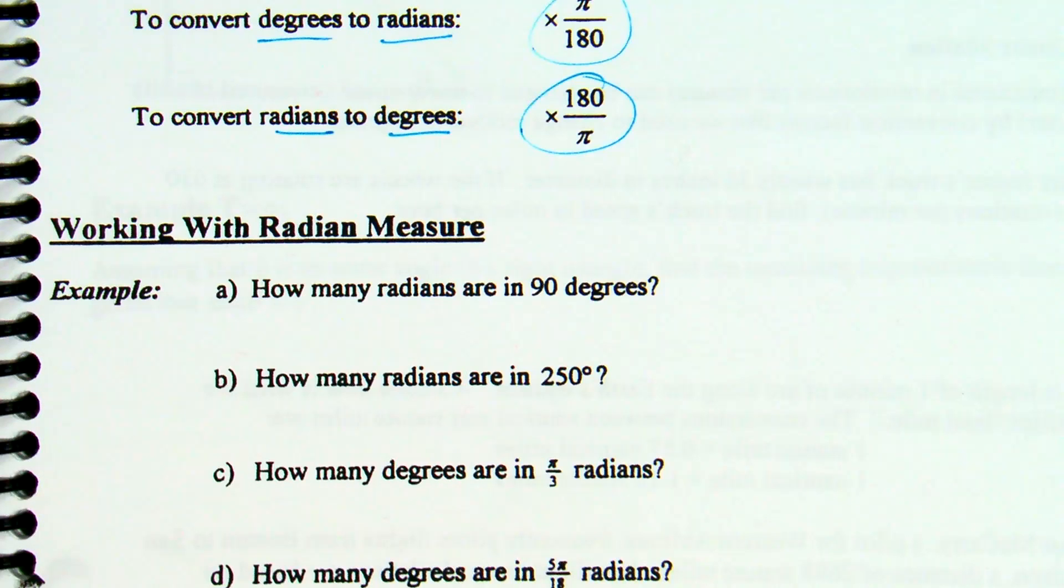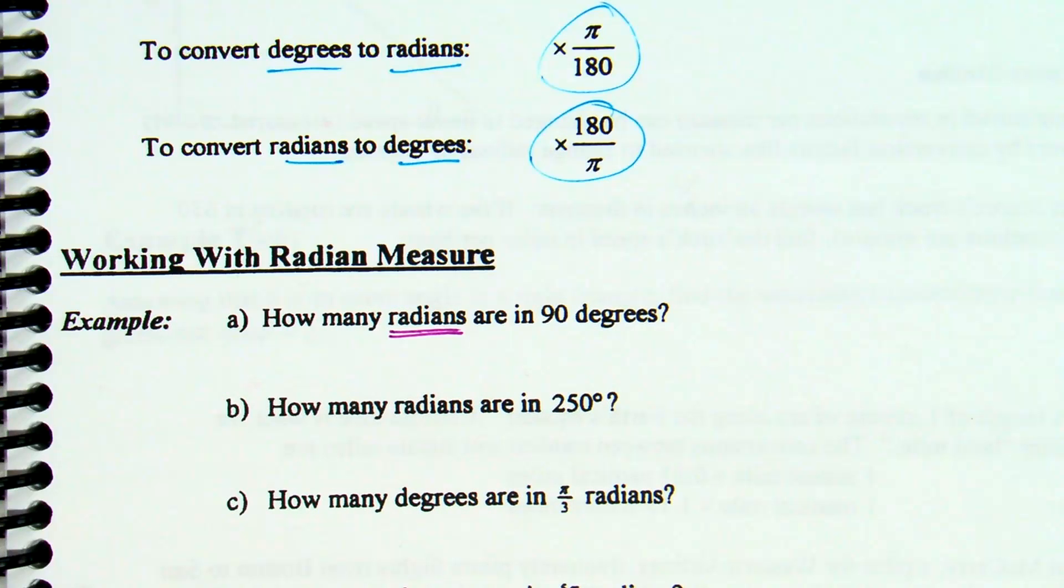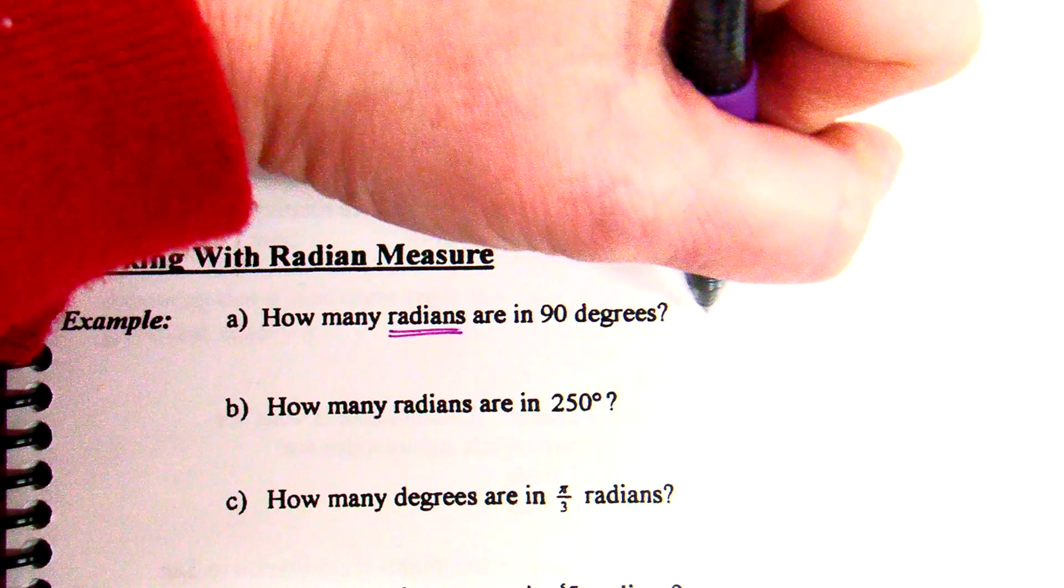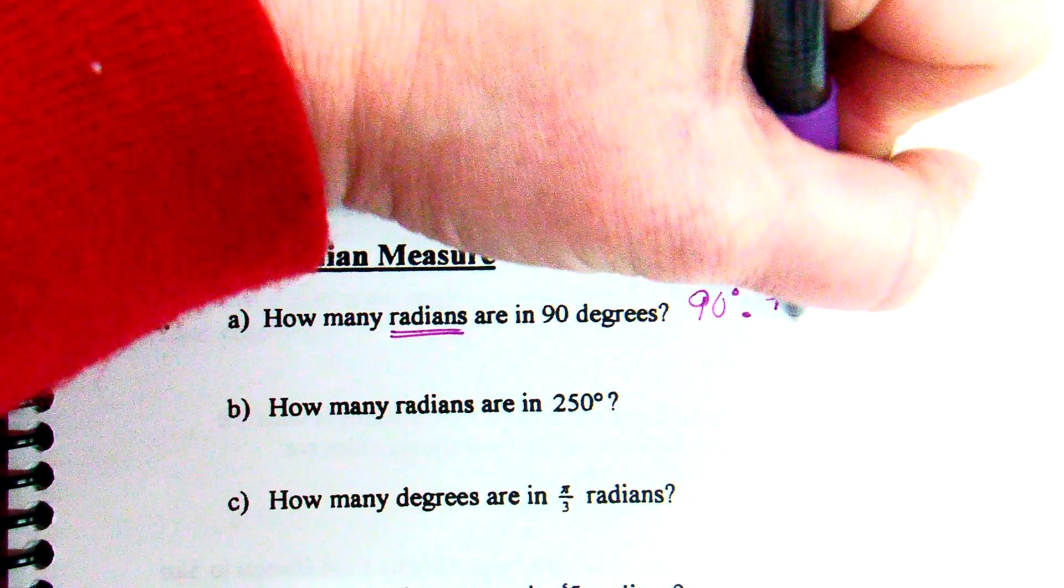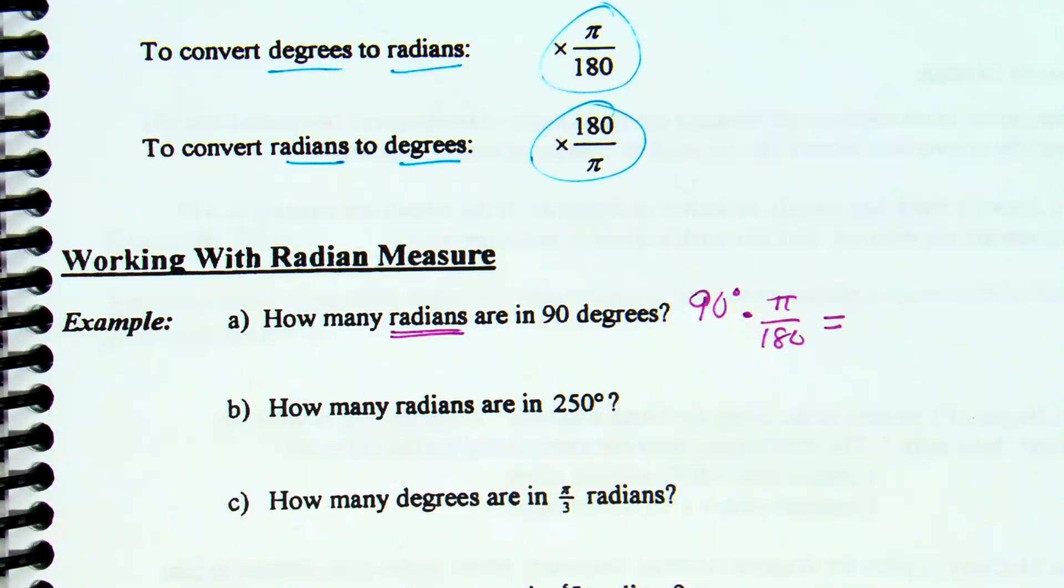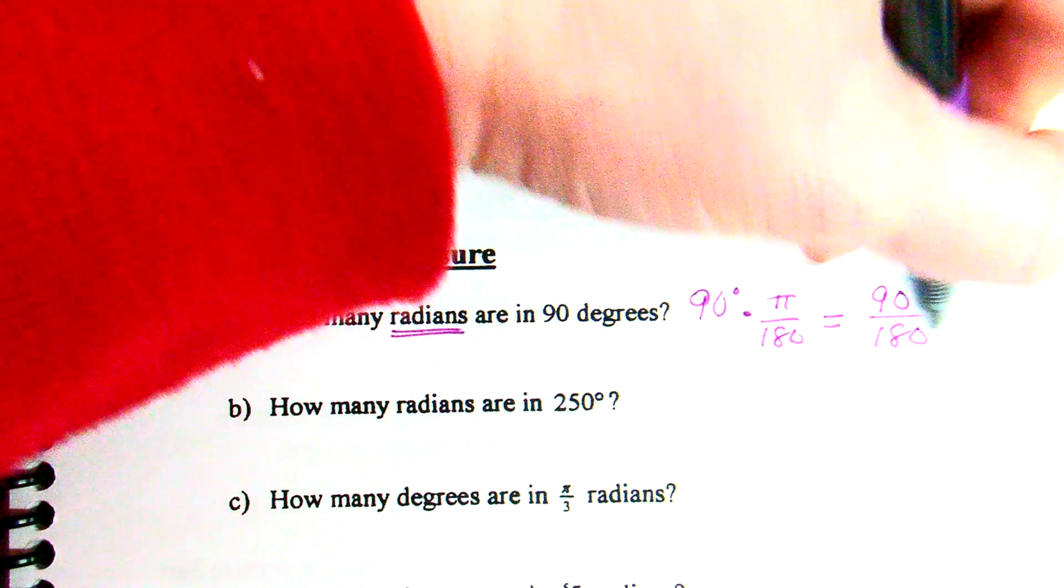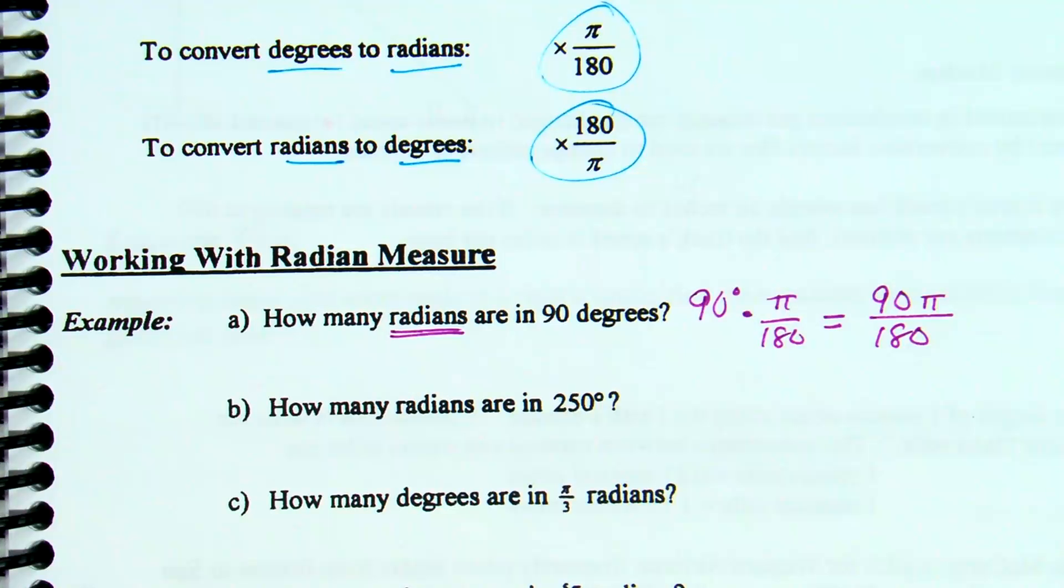So look at A. How many radians are in 90 degrees? I don't want a decimal, though. Good answer, but I don't want the decimal. What's the technique I'm going to do here? If we're trying to go to radians, what do I need to do? Multiply by pi over 180. So it's 90 degrees times pi over 180. Most of the time, we are going to leave our answer in terms of pi, meaning I want pi in the answer.